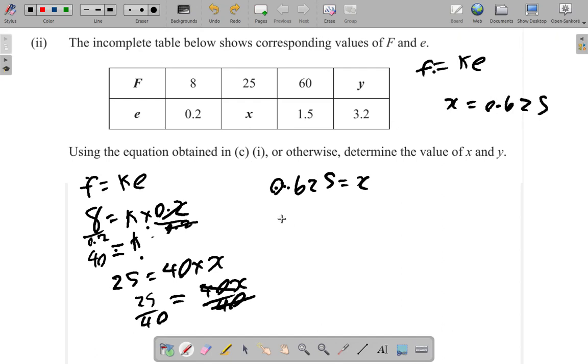What about y? f is equal to ke. y is equal to 40 times 3.2. So y is equal to 40 times 3.2 gives 128. 128. So y is equal to 128. Interesting.